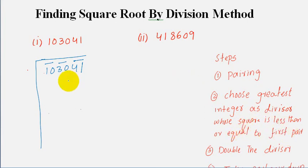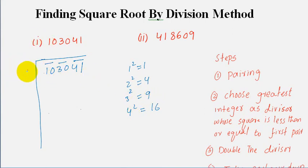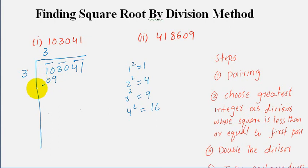We choose the greatest integer whose square is less than or equal to the first pair, which is 10. The square of 3 is 9, which is less than 10. The square of 4 is 16, which is greater than 10. So our first divisor is 3, and we place the same number in the quotient. 3 times 3 is 9, so after subtracting we get 1.